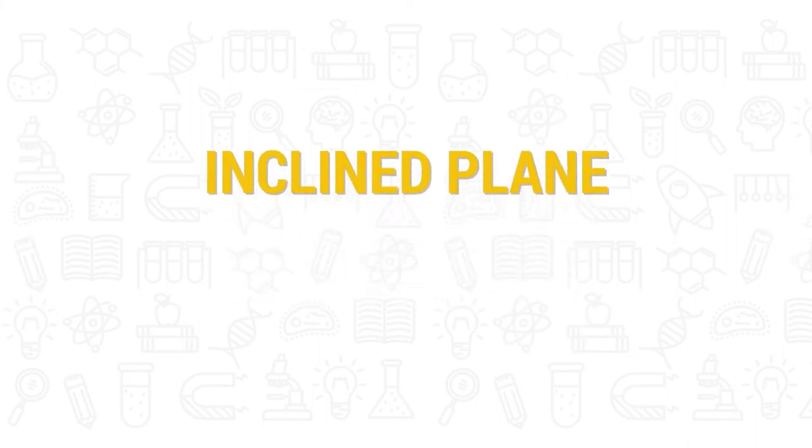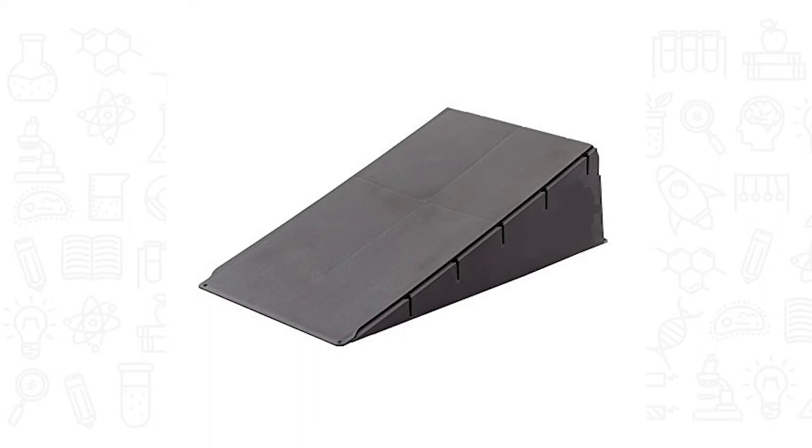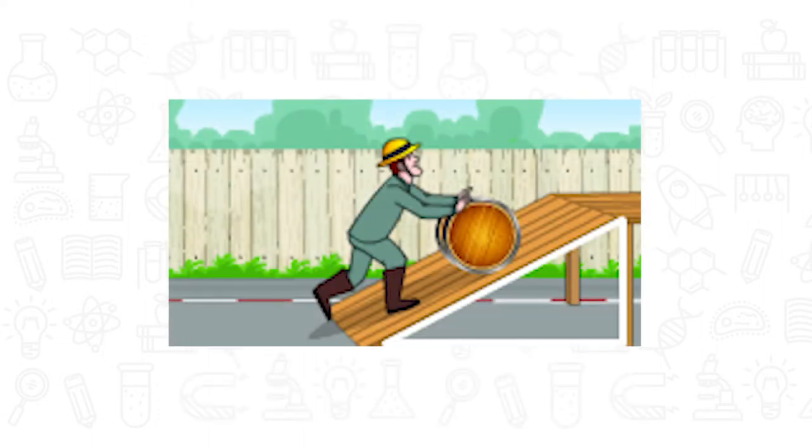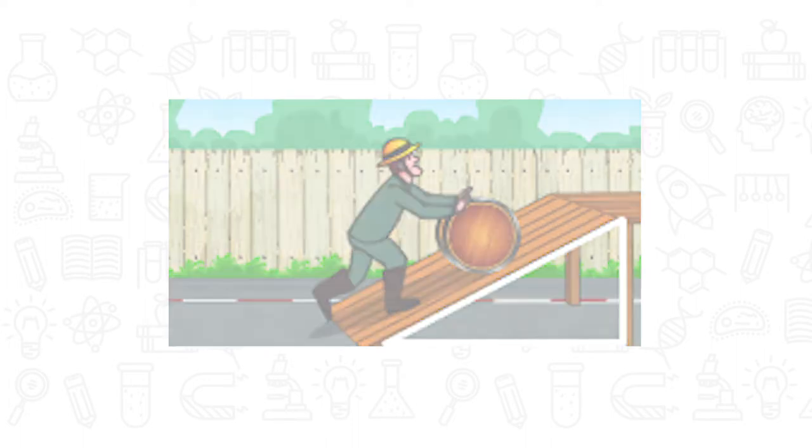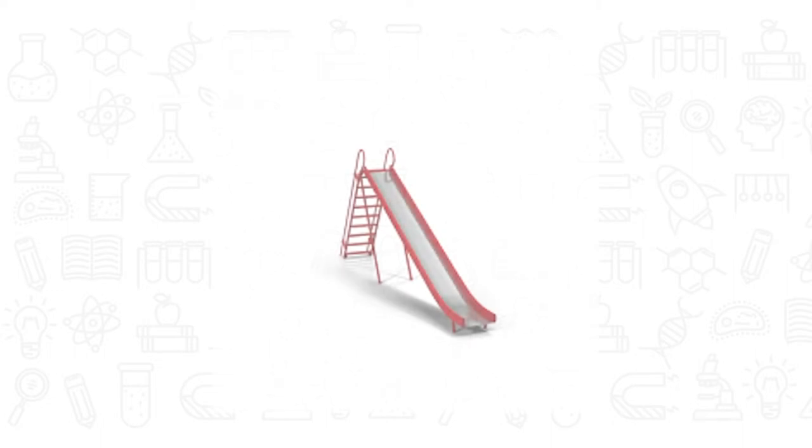An inclined plane is a flat surface that joins one level with a higher level. Inclined planes are used to move objects from a lower level to an upper level. A ramp or a slide is a type of inclined plane.